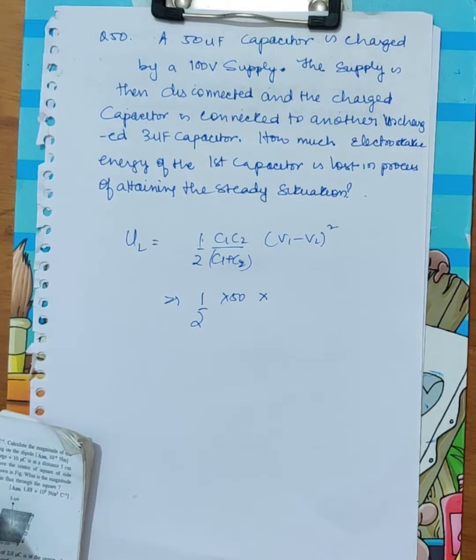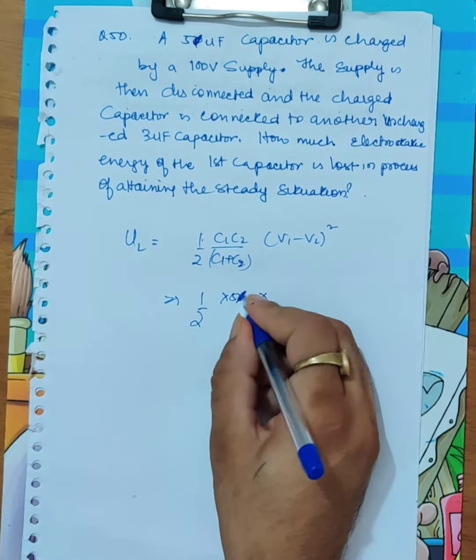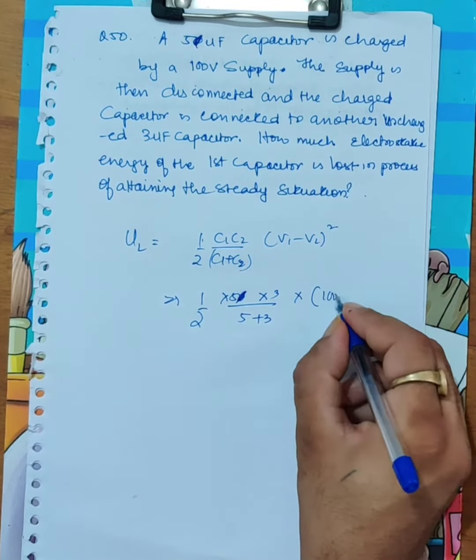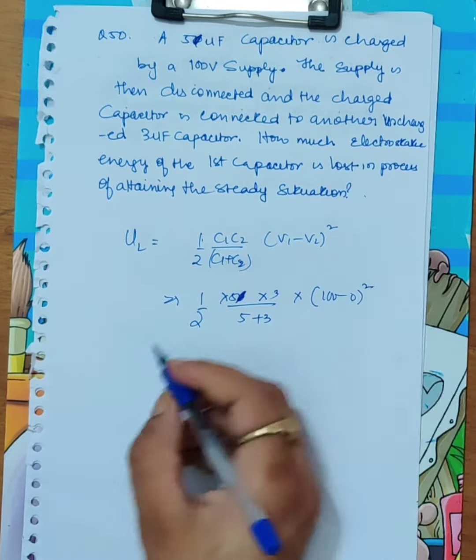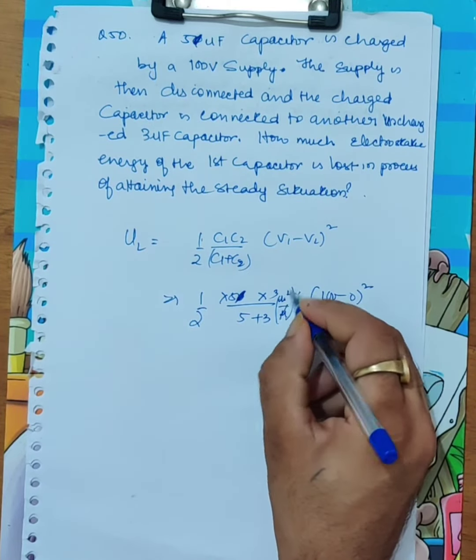It is 5. So one half into 5 into 3 upon 5 plus 3 into 100 minus 0 whole square. Here is microfarad.